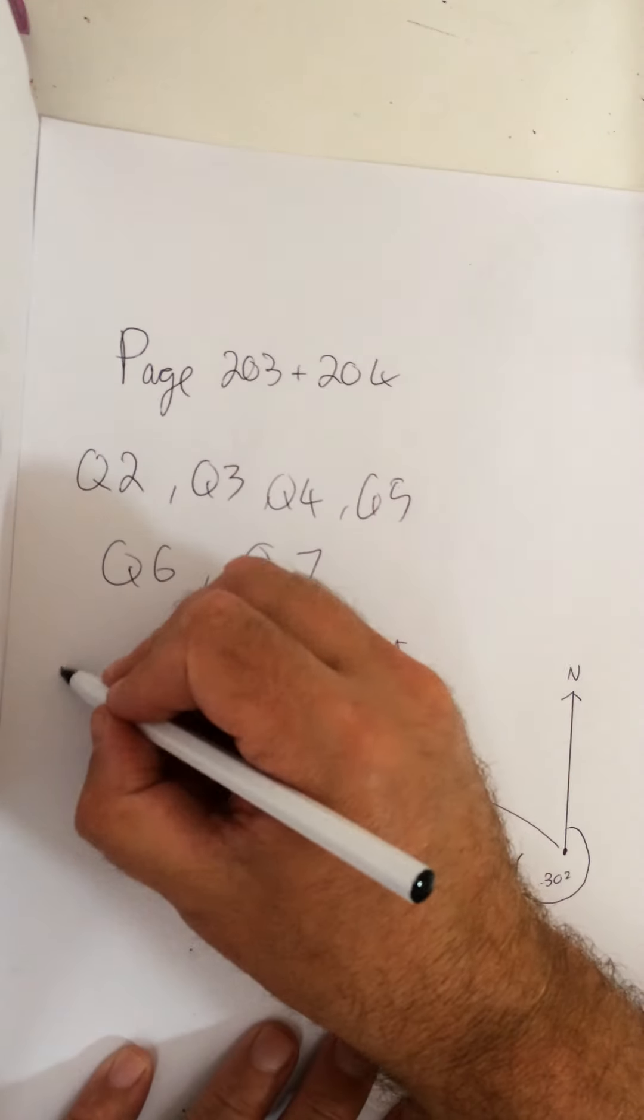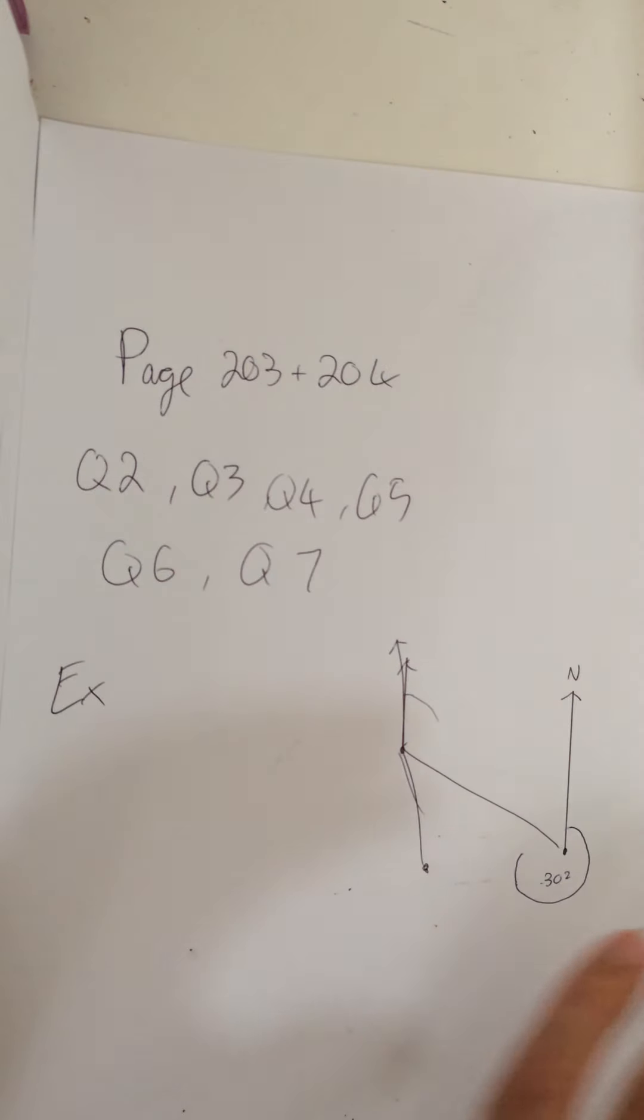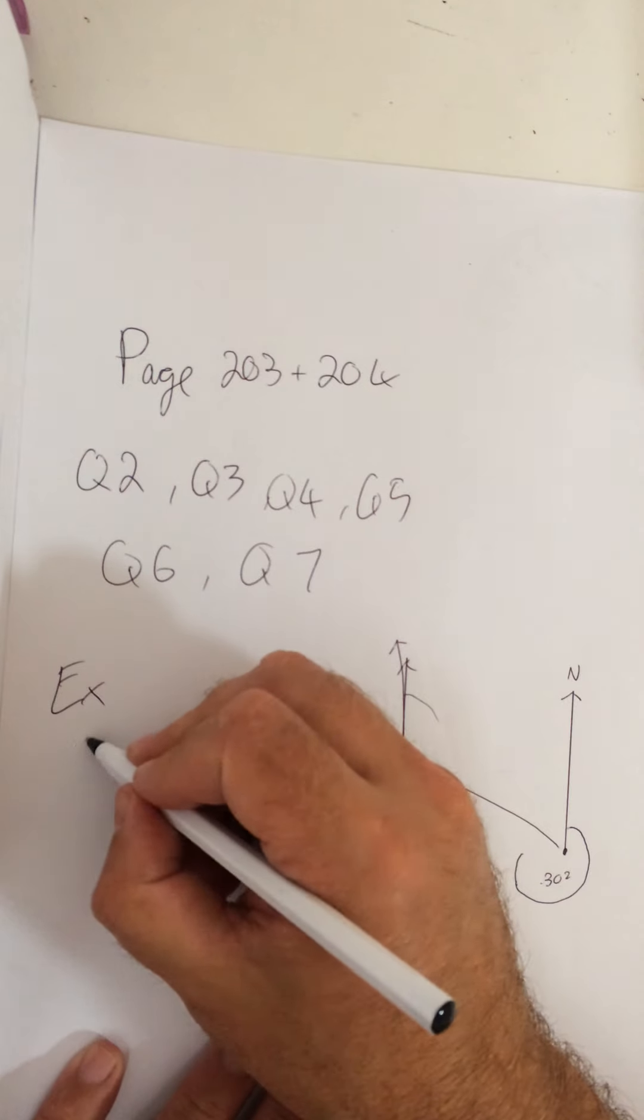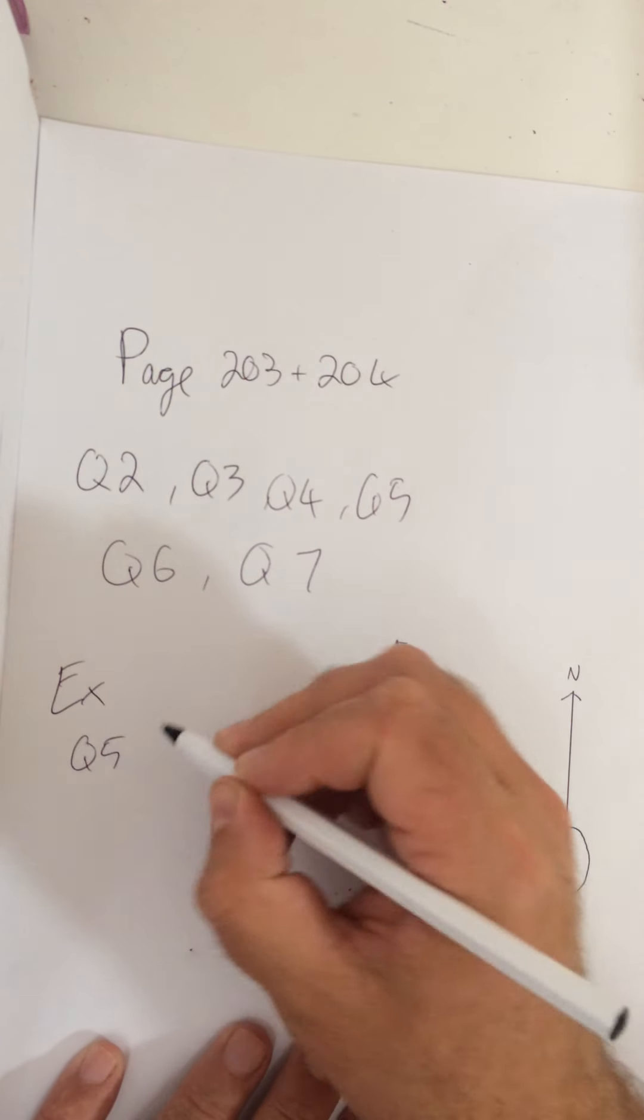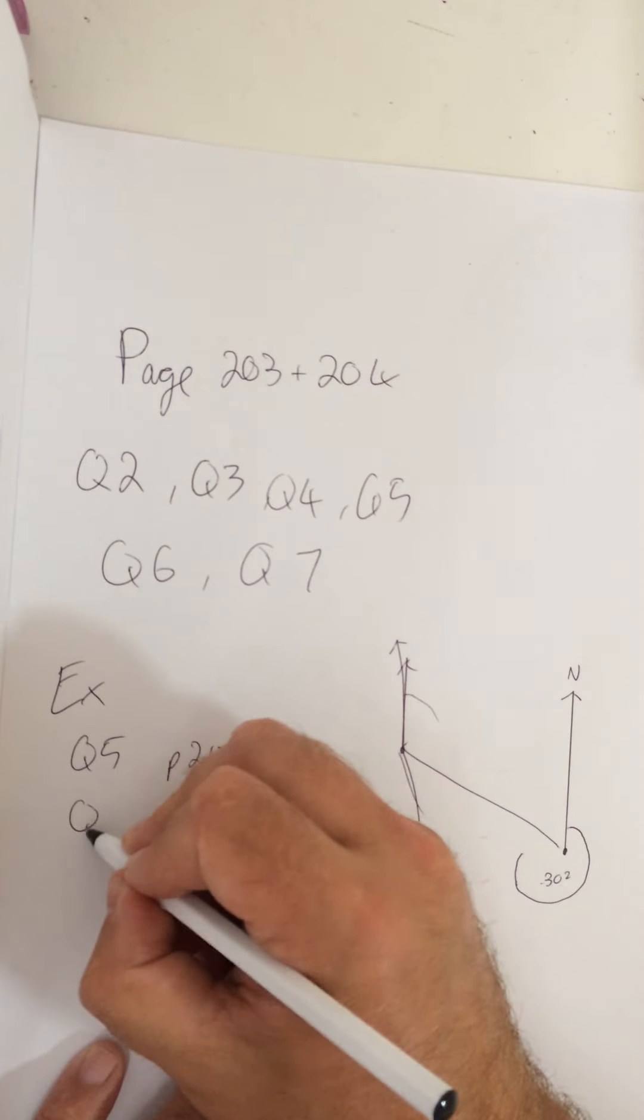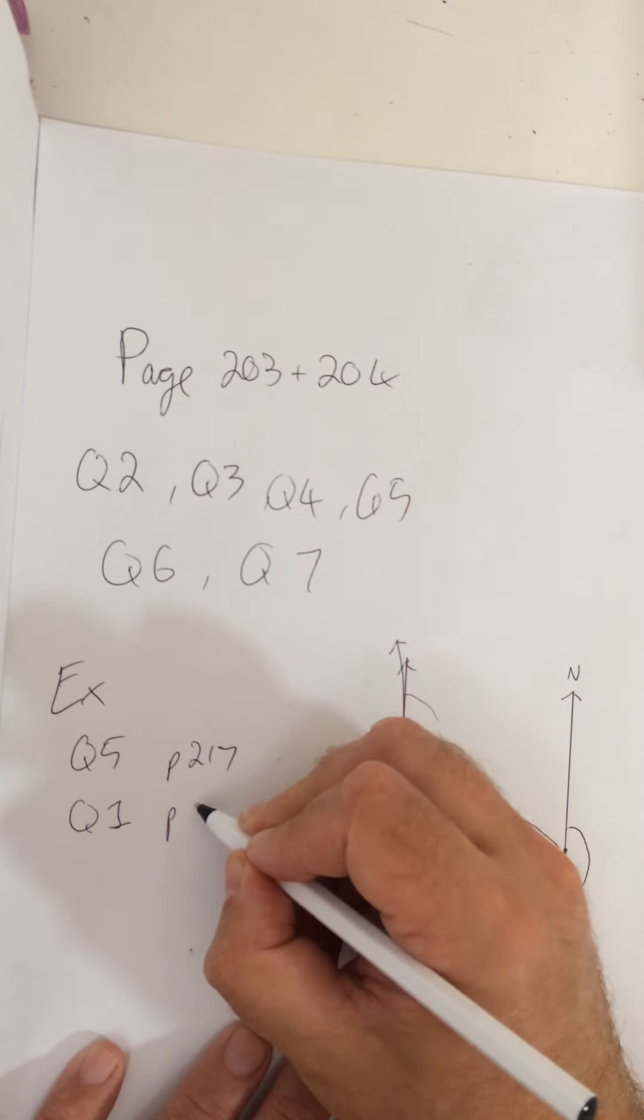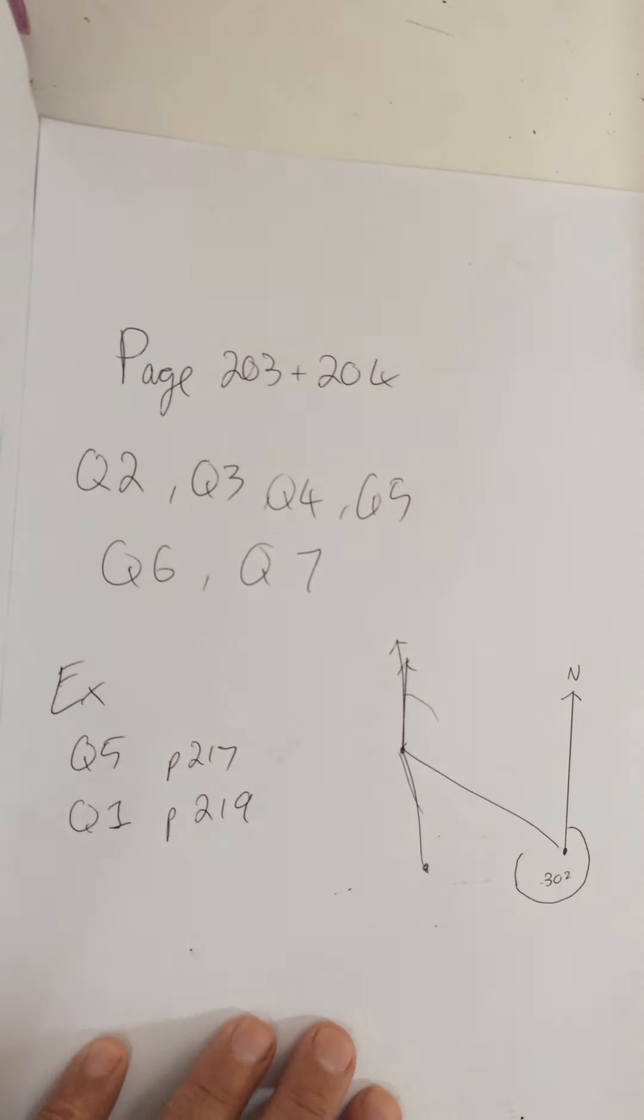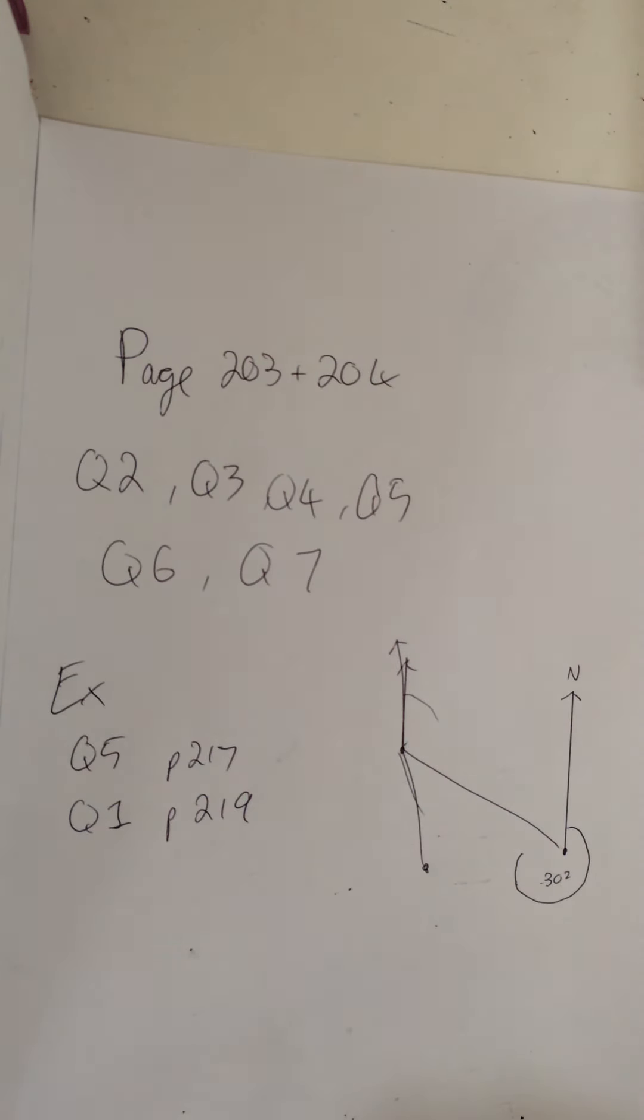Oh, sorry. The extension questions. If you've done those and you want to do the extension, there is extension question five on page 217 and question one on page 219. Hopefully that's all clear today. Hopefully we're fine with all that. All right. Good luck with that everyone. Please ask me if you need any help. But work your way through it. Have a go. Bye.